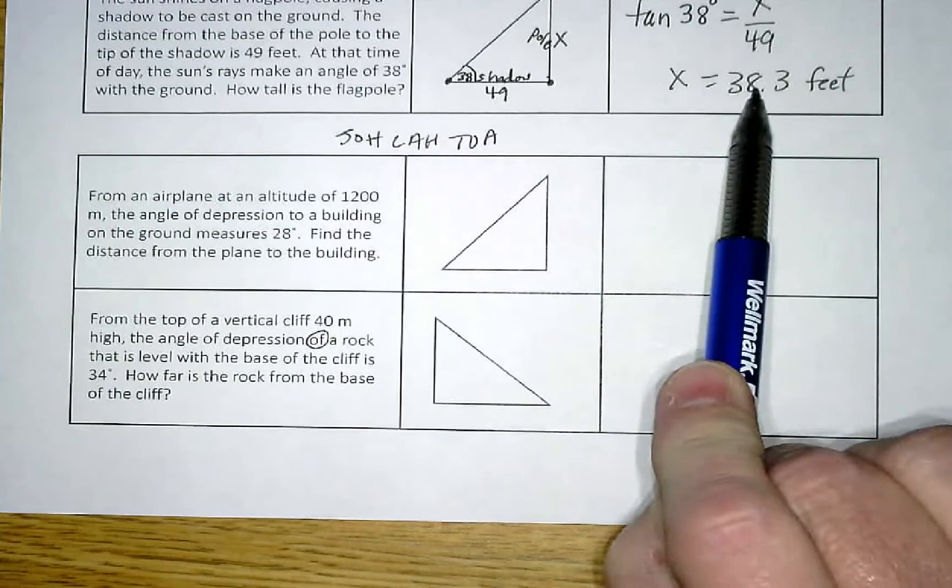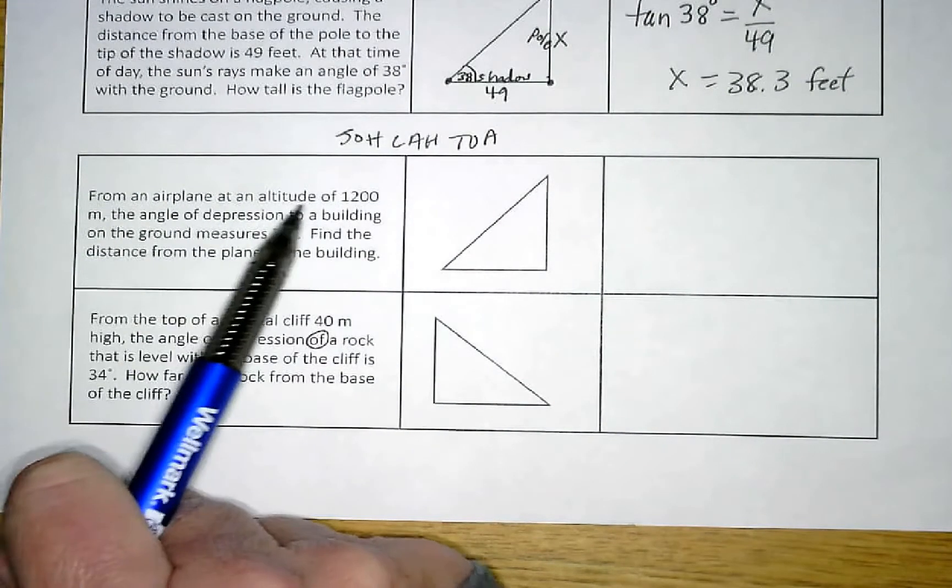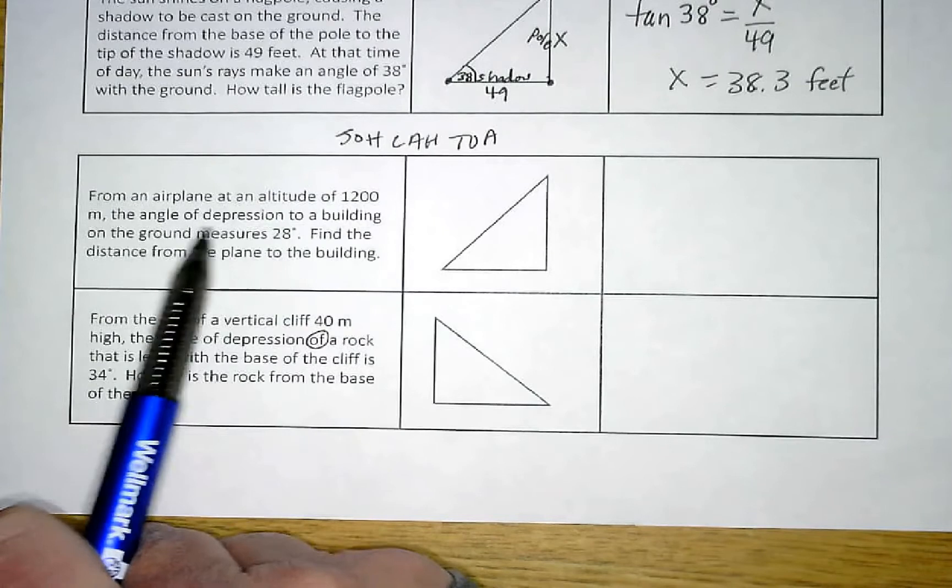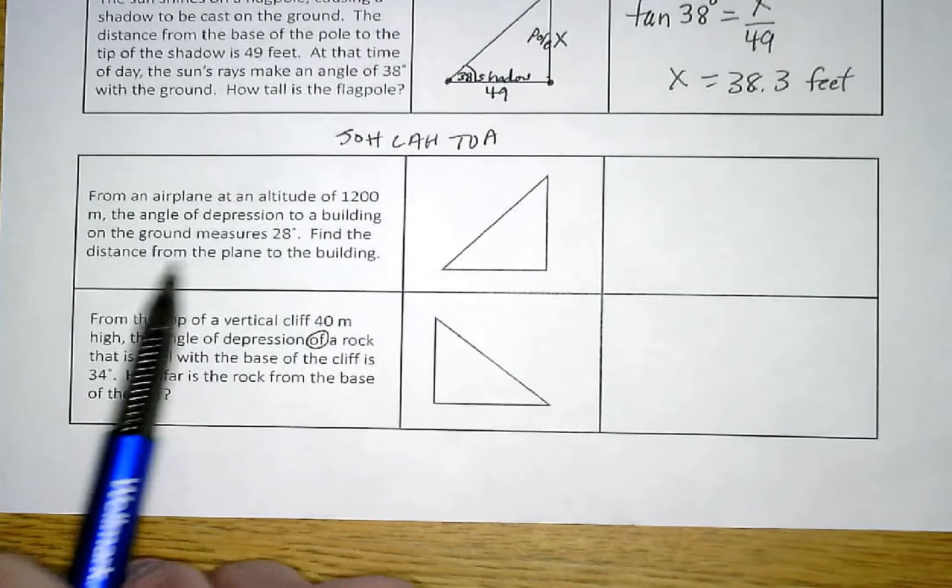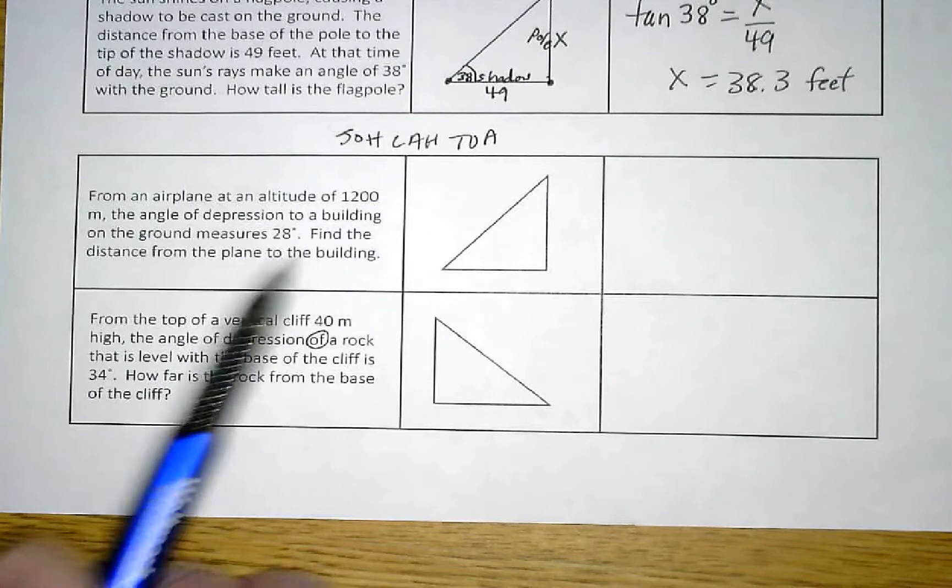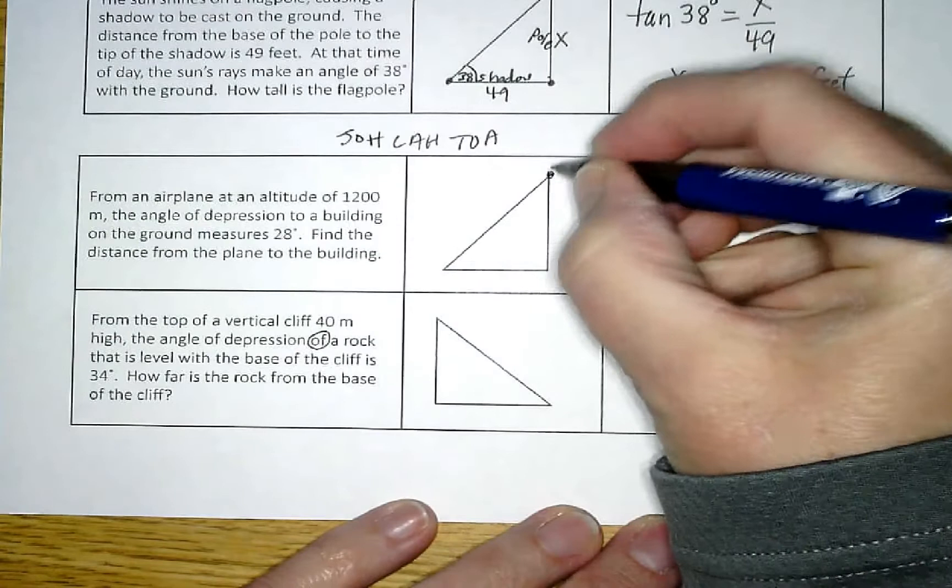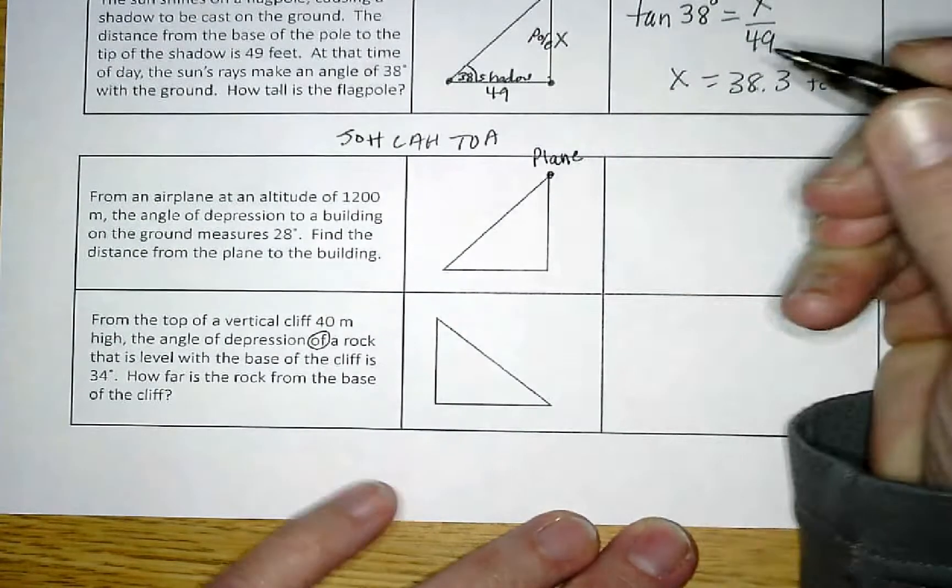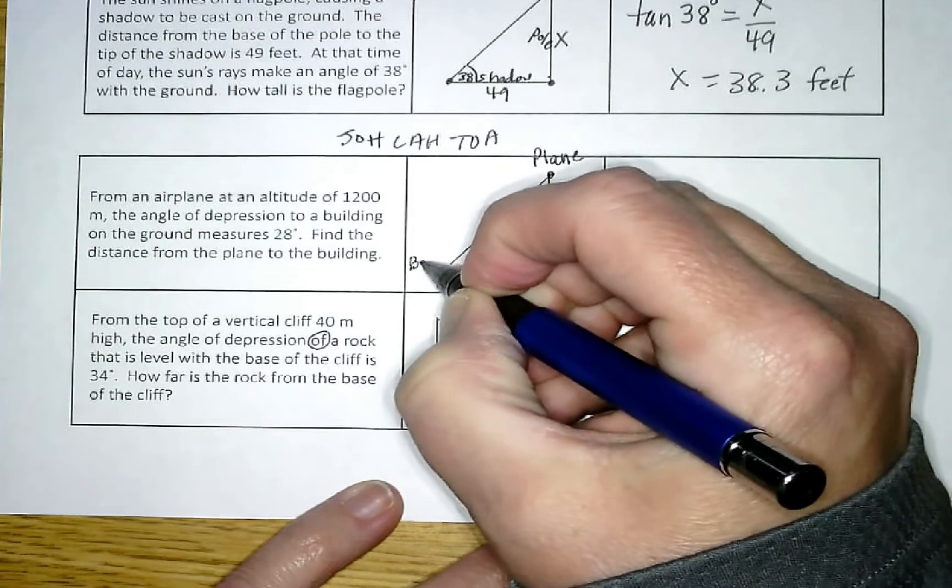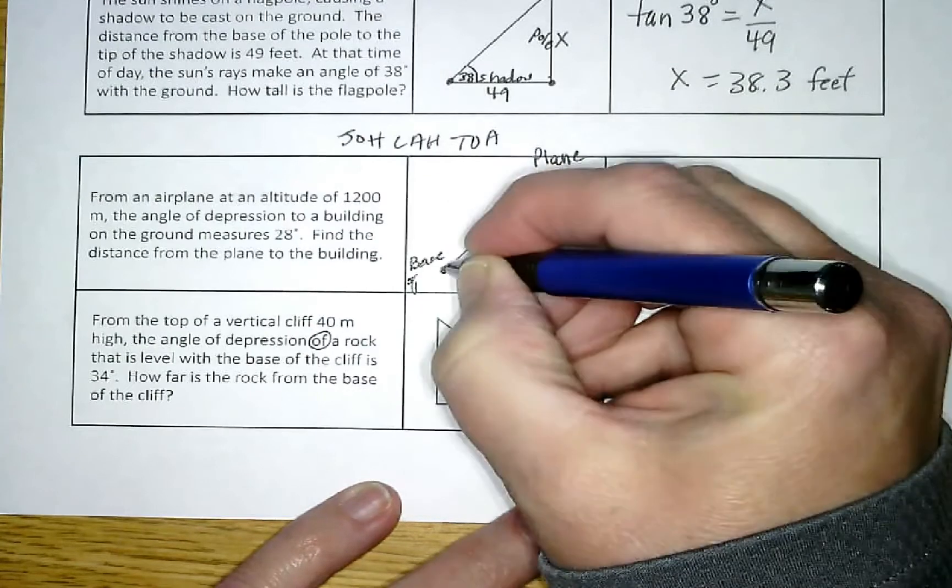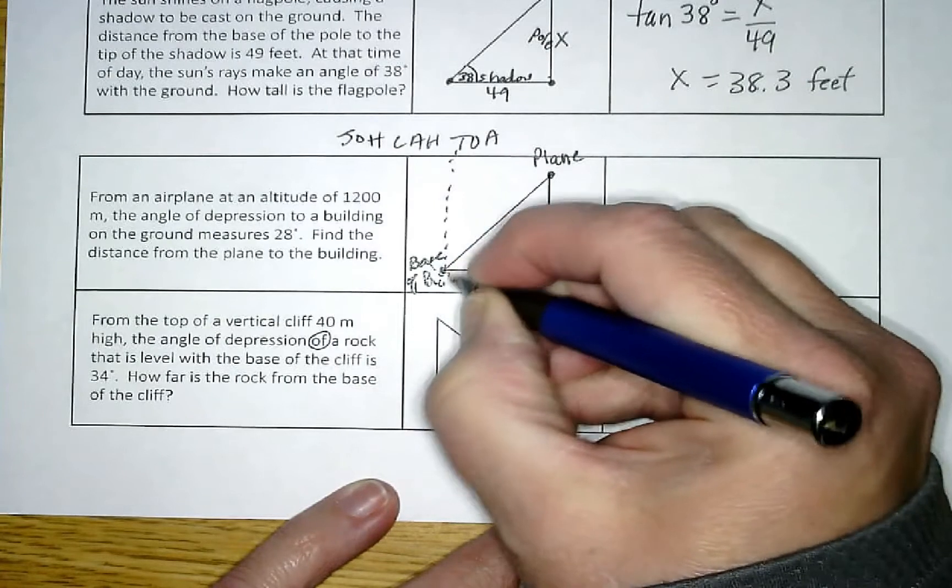On the next one: from an airplane at an altitude of 1200 meters, the angle of depression to a building on the ground measures 28 degrees. Find the distance from the plane to the building. Alright, so this is kind of a weird one because up here is the plane, down here is the base of the building. So there's kind of like a building right here. This is the base of the building.